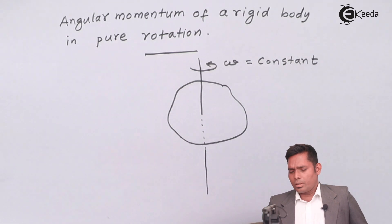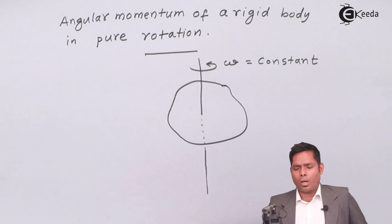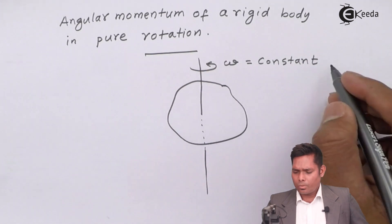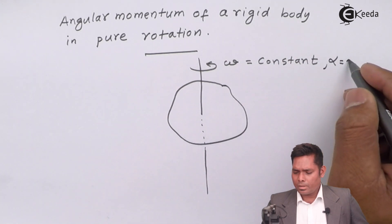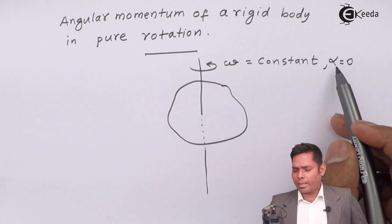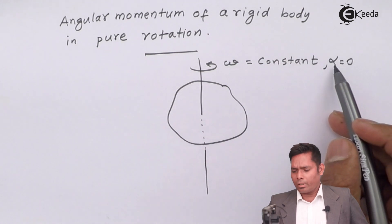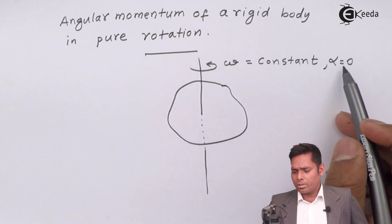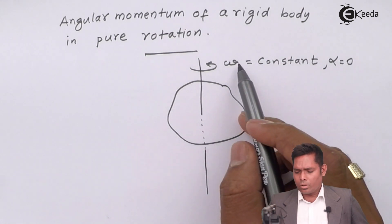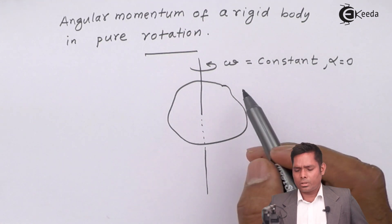Since omega is not changing with time, it is constant. So alpha is zero — the angular acceleration is zero. When the angular acceleration is zero, the quantity omega is constant.